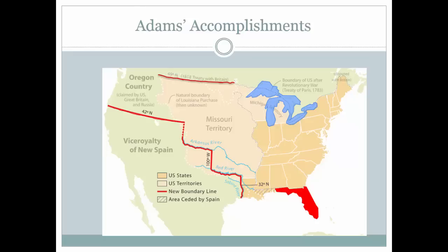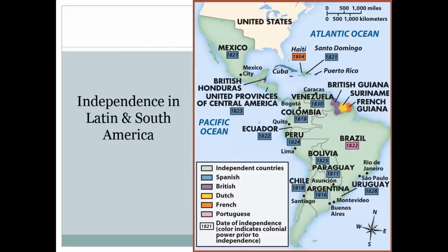But Adams wasn't going to stop there. Next, he looked beyond America's newly established borders. As you can see from this map, between 1816 and 1824, many Latin and South American colonies declared, fought for, and won their independence from their European mother countries — in fact, most of them winning independence from Spain.